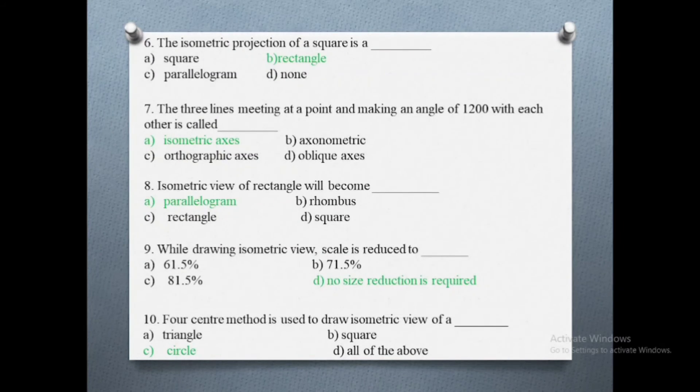Ninth question: while drawing isometric view, scale is reduced to. Options are: a) 61.5%, b) 71.5%, c) 81.5%, d) no size reduction is required. The correct answer is no size reduction is required.